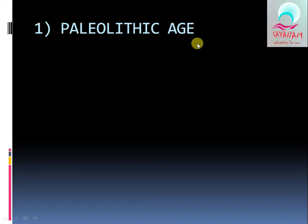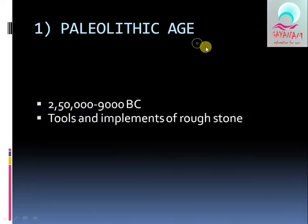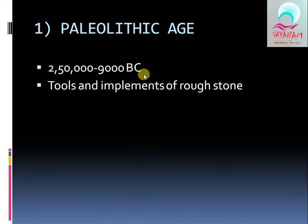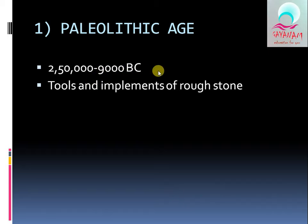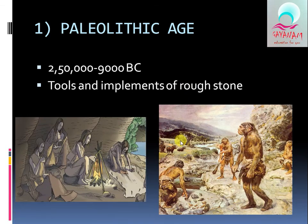We will now look at the Paleolithic Age. The Paleolithic Age spans from approximately 250,000 to 9,000 BC. An important part of this period is the tools and implements made from rough stone.